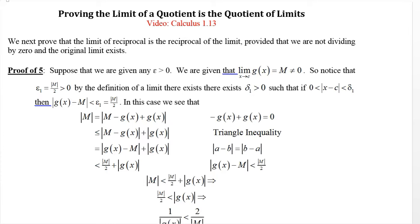This is Jack Jackson again and we're back with proving some properties of limits. In this video we're going to prove that the limit of a quotient is a quotient of limits. First we're going to prove that the limit of a reciprocal is the reciprocal of the limit. That's property 5.